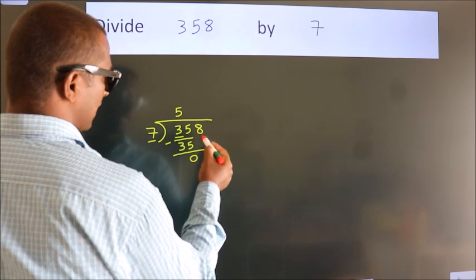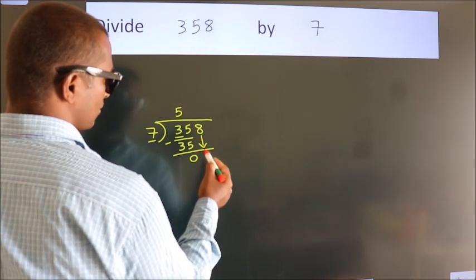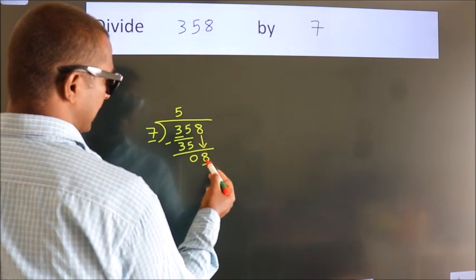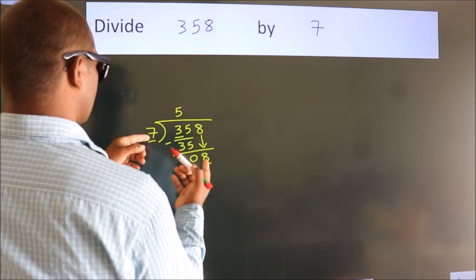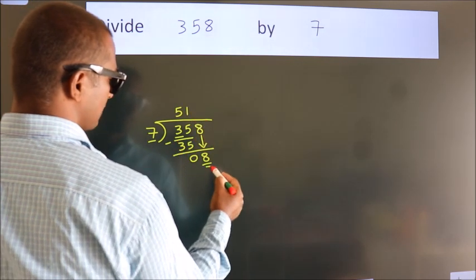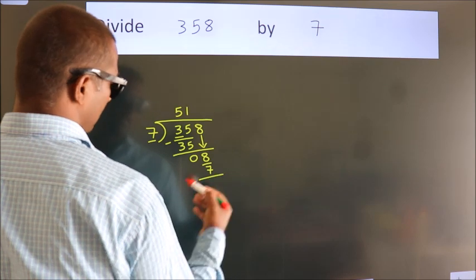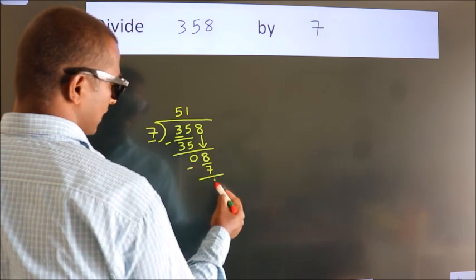After this, bring down the beside number. So 8 down. 8. A number close to 8 in 7 table is 7 ones, 7. Now we subtract. We get 1.